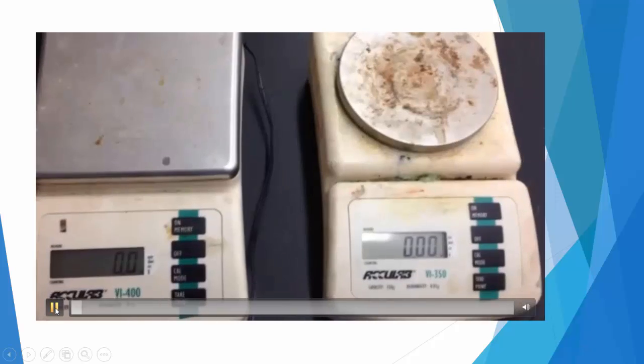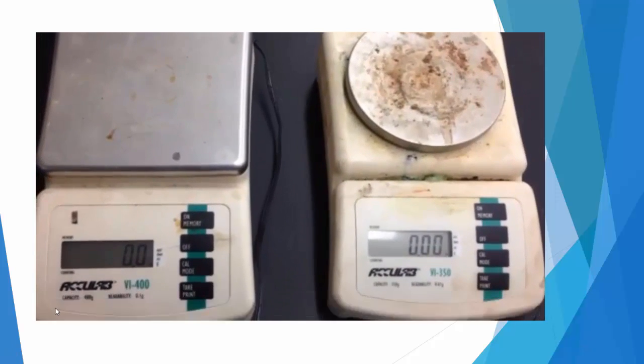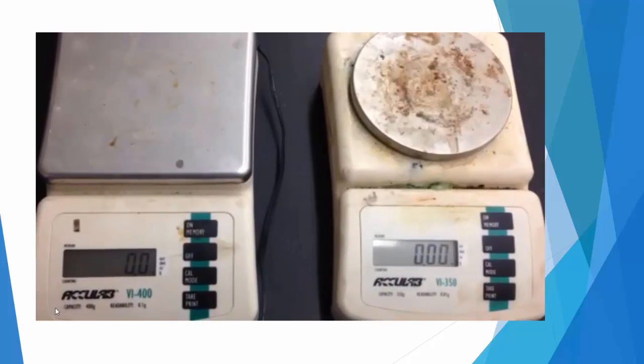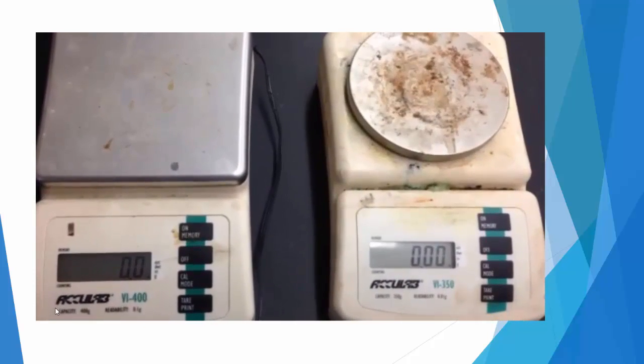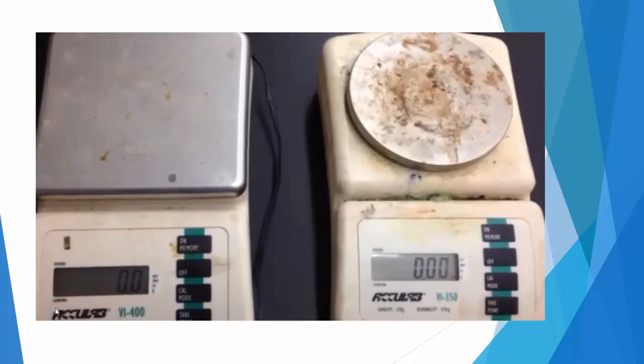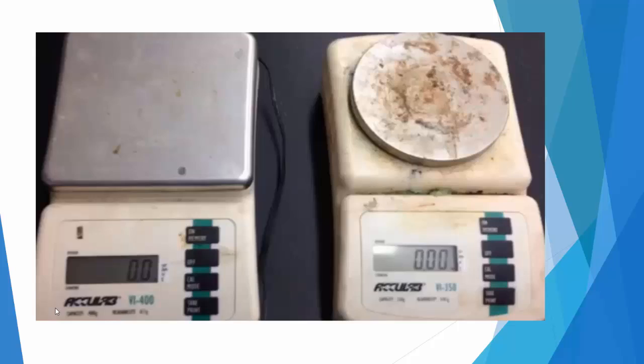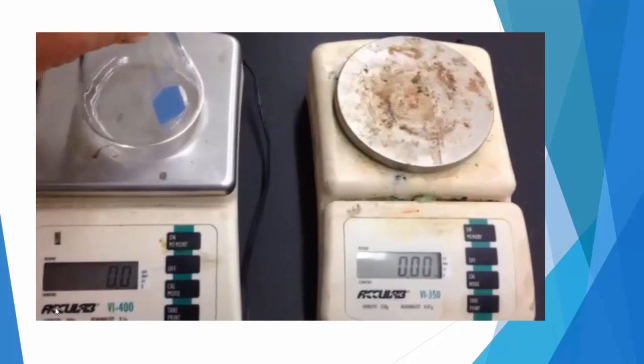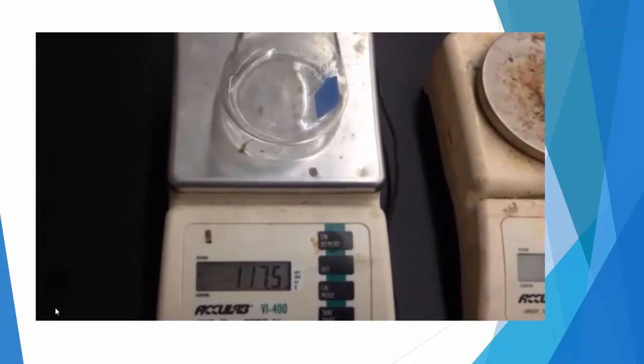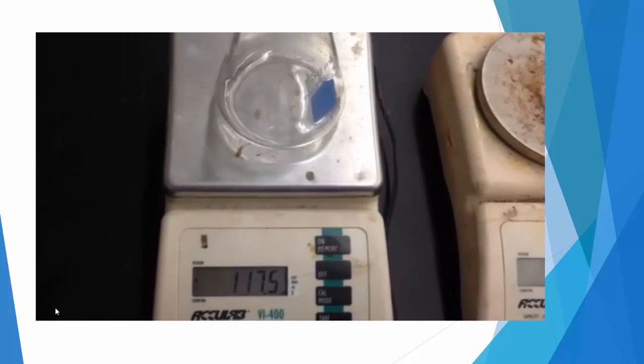So a quick little video. What I have here are two scales. The one on the left measures to the tenth of a gram or the one decimal point. The one on the right measures to the hundredth of a gram or two decimal points. Both have been tared to zero. I want to place a flask on the first one and you see that it measures exactly 117.5 grams.